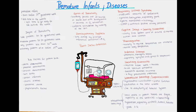One way of categorizing how preterm a baby is uses degrees of preterm. There are four degrees: late preterm, moderate preterm, very preterm, and extremely preterm. Late preterm would be 34 to 36 gestational weeks. Moderate preterm would be from 32 to 34 weeks. Very preterm would be less than the 32nd gestational week. And extremely preterm would be at or before 25 weeks.